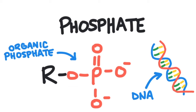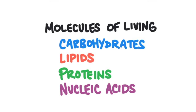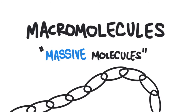We've already mentioned the four main categories of molecules within a living thing: carbohydrates, lipids, proteins, and nucleic acids. These molecules are made up of a carbon backbone with a combination of different functional groups. And as far as molecules go, these molecules are absolutely massive. Biologists call them macromolecules because they're so big — they can be literally made up of thousands of atoms bonded together.